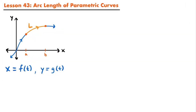Towards the beginning of Calculus 2, we looked at how to find the arc length of a curve defined by a function in terms of x and y. But now what we want to do is find the arc length of a plane curve, or parametric curve, represented by parametric equations. We have a parametric curve represented by x equals f(t) and y equals g(t), and we want to know the length of the curve between x equals a and x equals b.